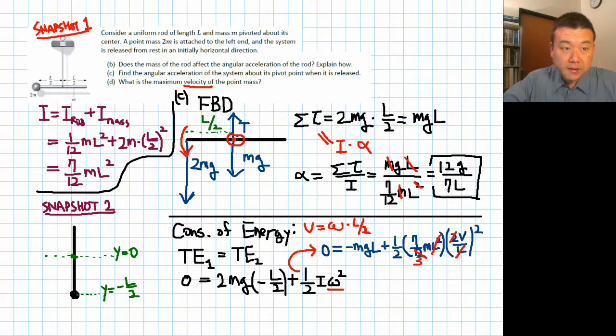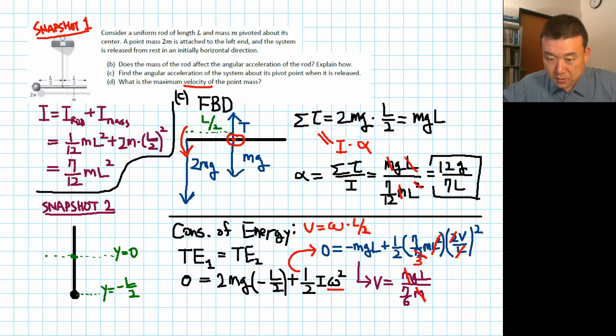What is v? So this is the maximum velocity v. Maximum velocity v equals all of this moved over to the other side. MgL divided by the things that were left on the right-hand side, 7/6 M. I forgot to cancel out M, so let's do that now. So M's cancel out.